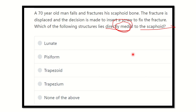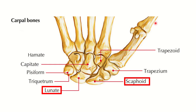First of all, we need to look at the scaphoid and the other bones of the wrist. The scaphoid is part of the carpal bones. In each hand, there are a total of eight carpal bones. Let's look at the carpal bones here — they lie in two rows.